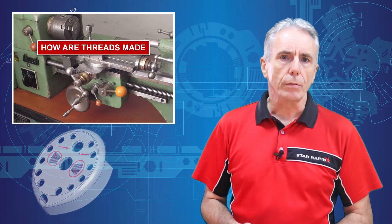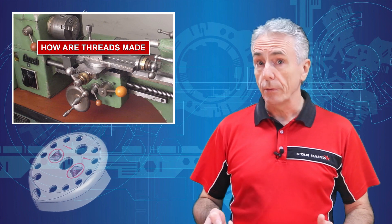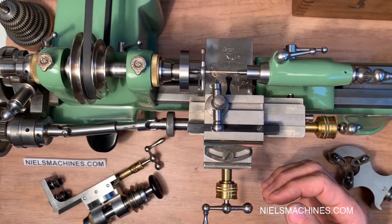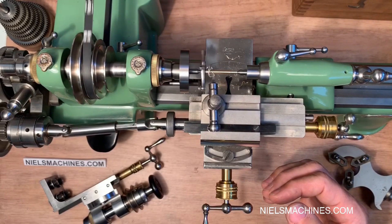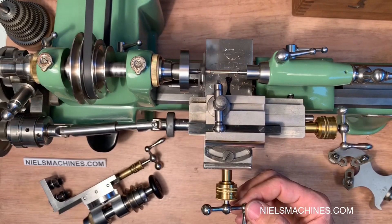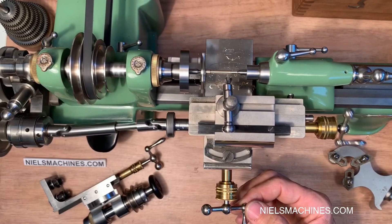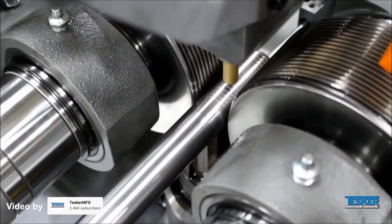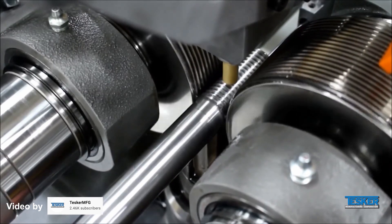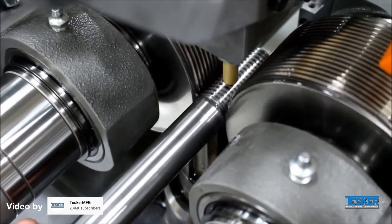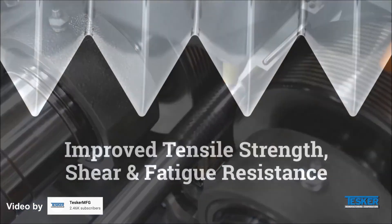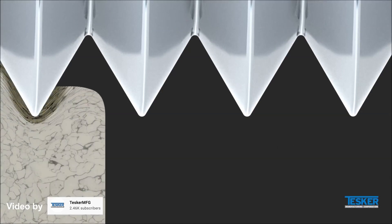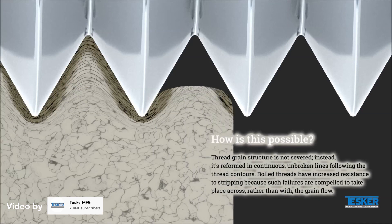How are threads made? External threads are made a couple of different ways. First, they can be cut by removing material using a dedicated screw cutting machine or a lathe — that's how we've done it for a long time, when we weren't meticulously cutting them by hand with a file. More recently, perhaps in the 1860s, we started to cold roll threads. Thread rolling doesn't waste material and can improve the strength of the threads, because it compresses the stock material rather than shearing it.